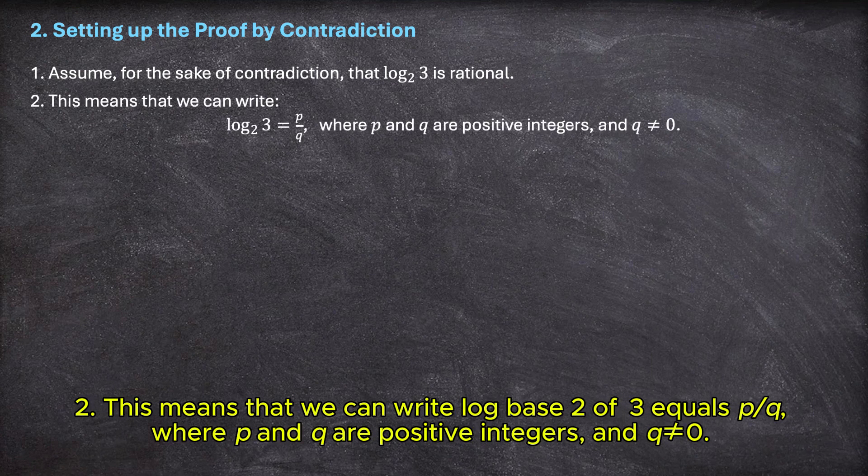Two, this means that we can write log base 2 of 3 equals p over q, where p and q are positive integers, and q is not equal to 0.